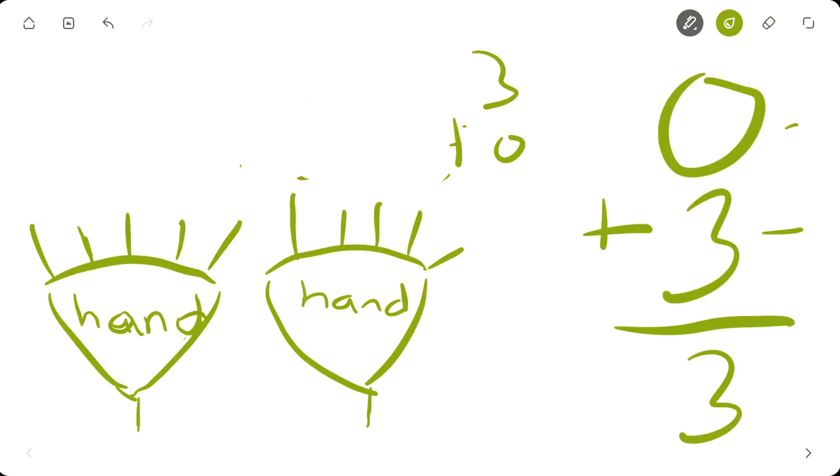3 plus 0 is 3. 5 plus 0 is 5. 100 plus 0 is 100. 0 plus 100 is 100.